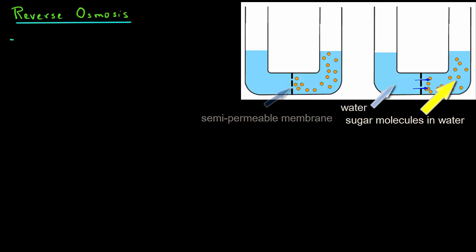Note that sugar molecules cannot pass through the membrane because the size of the sugar molecules is larger than the pore space of the membrane.